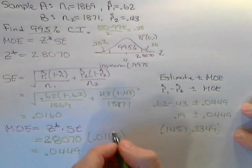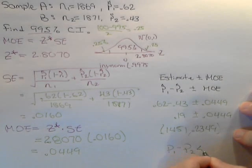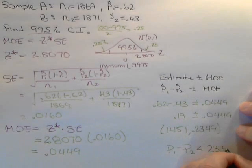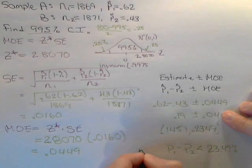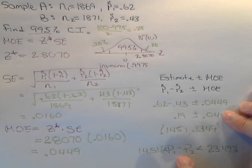So we're 99.5% confident that the difference of the two population proportions is between 23.49% and 14.51%.